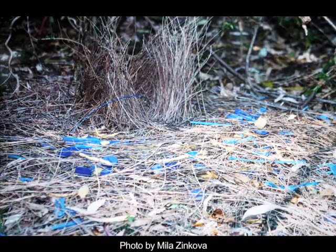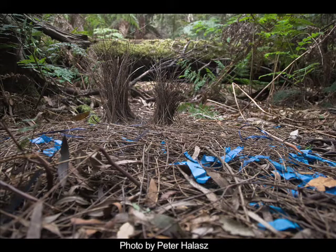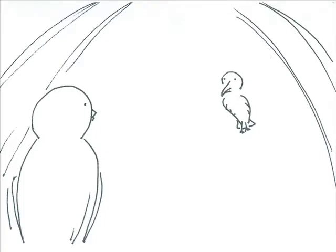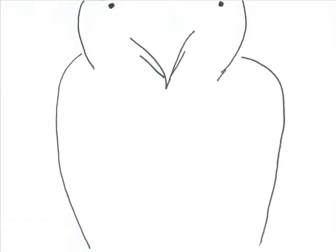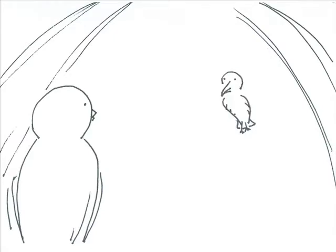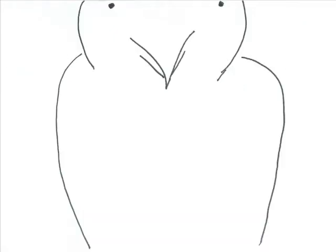Female bowerbirds will fly around to all of the different males, and sometimes the males will do a little jig. Females will watch, and after they've determined which male they like best, they'll return to that male, and he will be the one to mate with her.